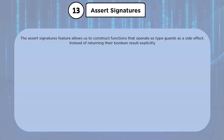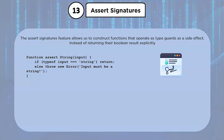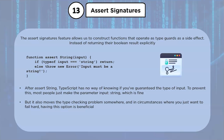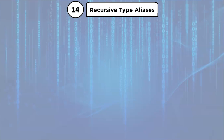The assert signature feature allows us to construct functions that operate as type guards as a side effect, instead of returning a boolean result explicitly. After a search string, TypeScript has no way of knowing if you have guaranteed the type of input. If the assert function ever returns, TypeScript filters the type of input to string — just as it would inside an if block with a type guard. To be safe, the assert function must either throw an error or not return at all if the assertion isn't true.